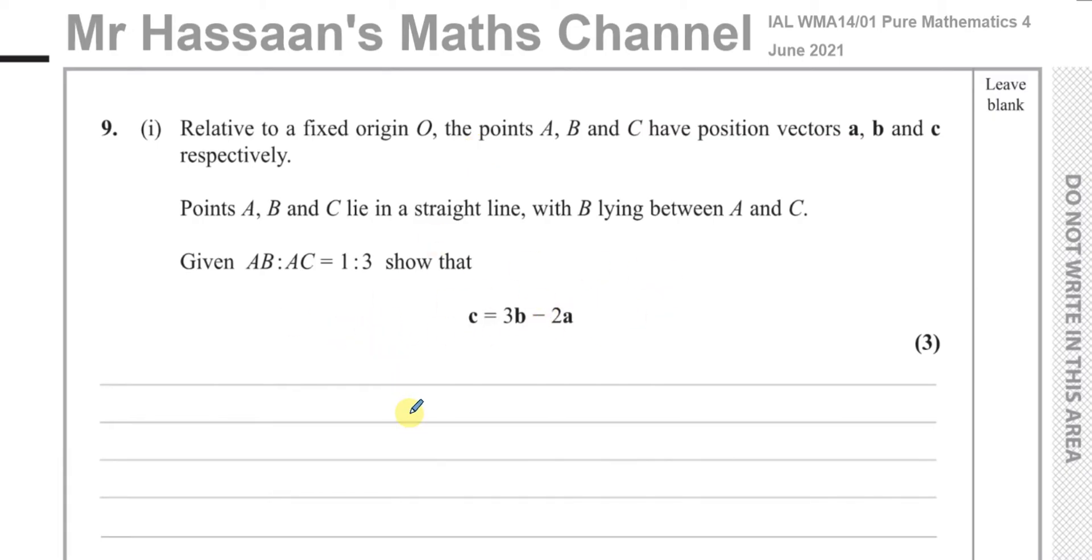So it says relative to a fixed origin O, the points A, B, and C have position vectors a, b, and c, lowercase, respectively. The points A, B, and C, uppercase, lie in a straight line with B lying between A and C. Given that AB to AC, or the ratio of AB to AC is 1 to 3, show that c equals 3b minus 2a.